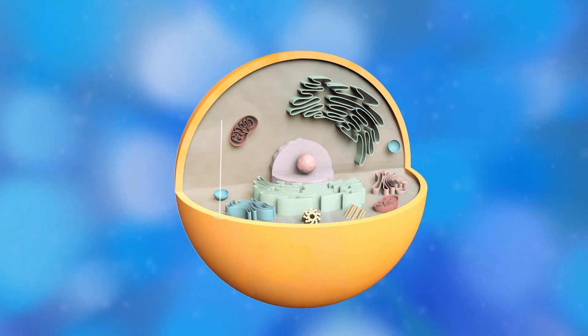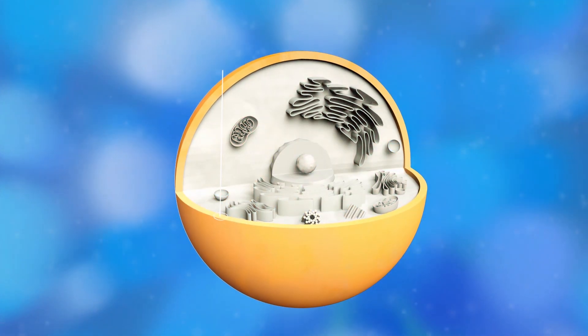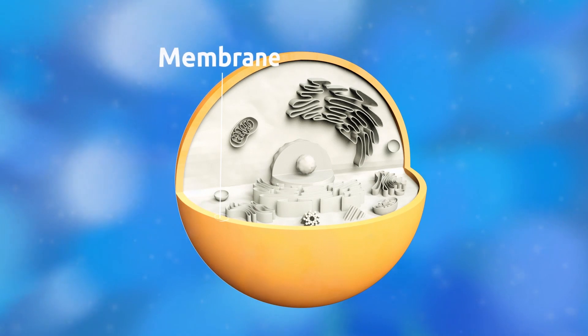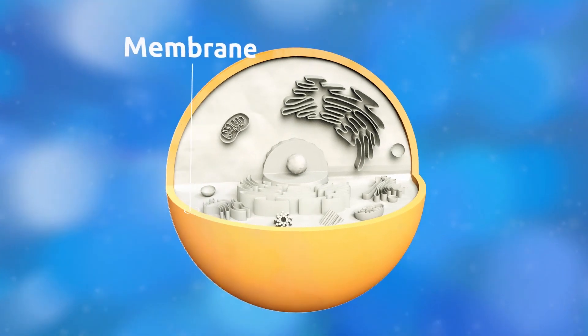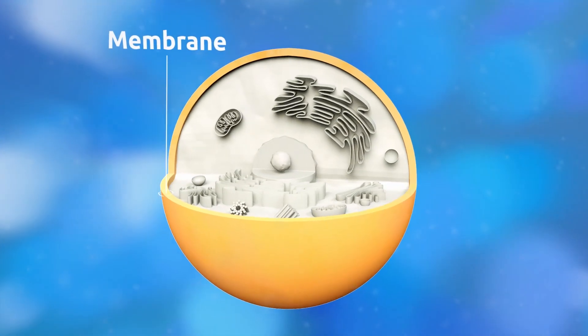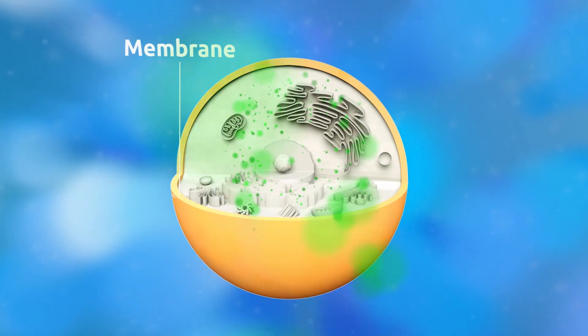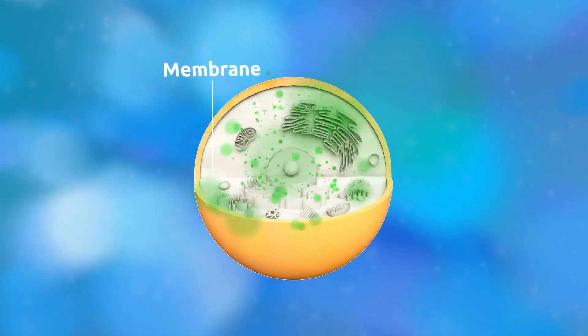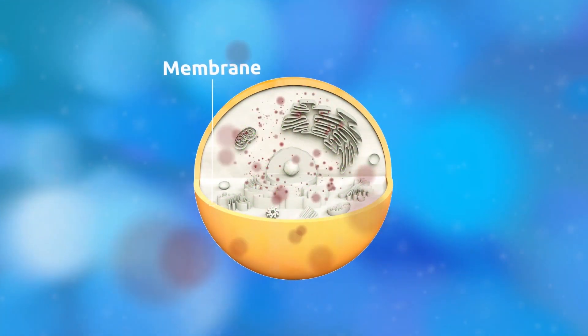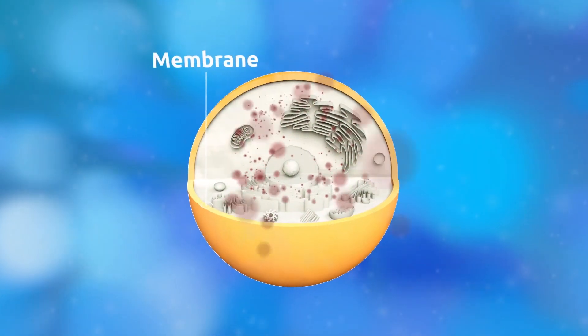The membrane is a layer that surrounds and protects the cell from the outside environment. The main function of the membrane is to allow food in and release waste substances.